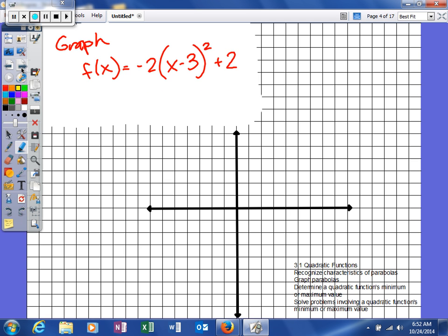Let's look at an example. Here's example number one that we're going to try to graph. It says graph f(x) equals negative 2 times (x minus 3) squared plus 2. So the first thing we're going to do when we're trying to graph a nice little parabola is to find the vertex.